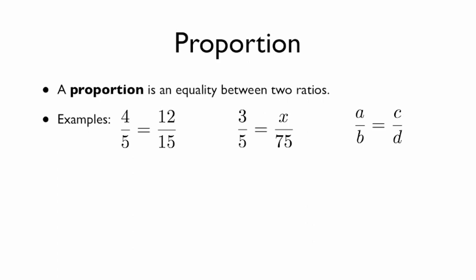To solve that middle proportion, you take a cross product: 5 times x equals 3 times 75, which simplifies to x equals 45.